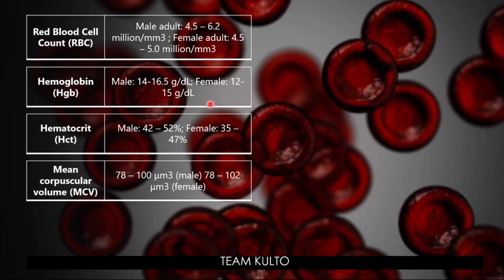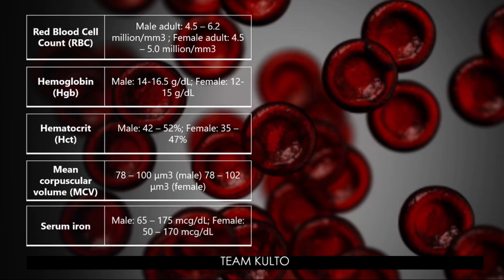Mean corpuscular volume, MCV. The normal value for males is 78 to 100, and for females it is 78 to 102. Next, serum iron — the amount of iron in the blood. For males: 65 to 175 micrograms per deciliter. For females: 50 to 170 micrograms per deciliter. Be mindful of the units.